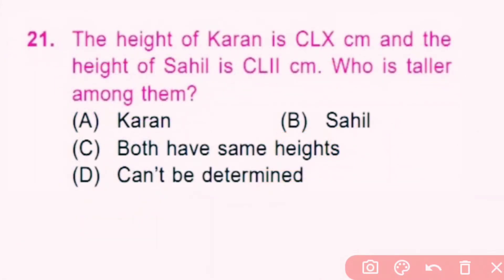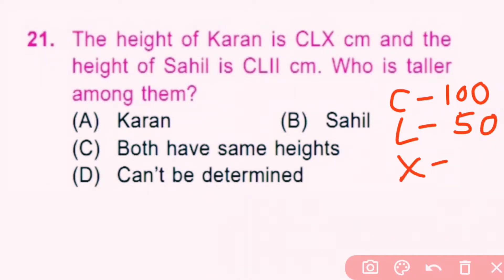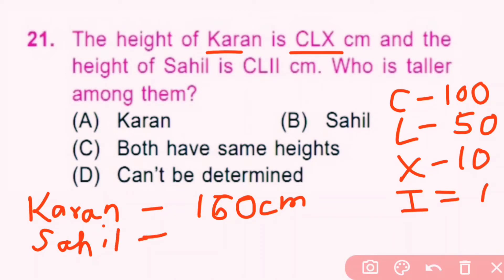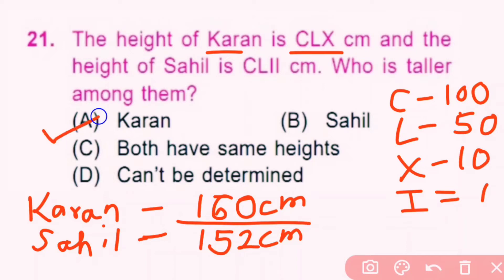Question number 21. The height of Kunal is CLX centimeters and the height of Sahil is CLII centimeters. Who is taller? In Roman numerals, C is 100, L is 50, X is 10, and I is 1. Kunal's height CLX means 100 + 50 + 10 = 160 centimeters. Sahil's height CLII means 100 + 50 + 2 = 152 centimeters. So A is the correct answer.